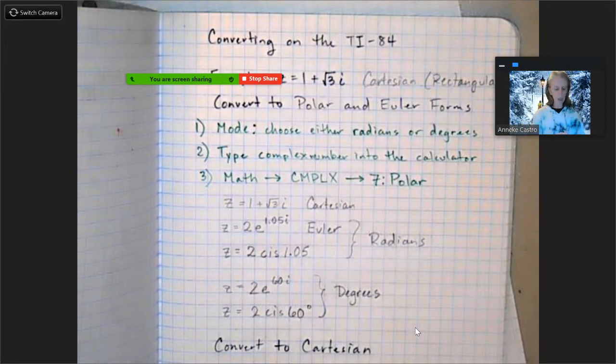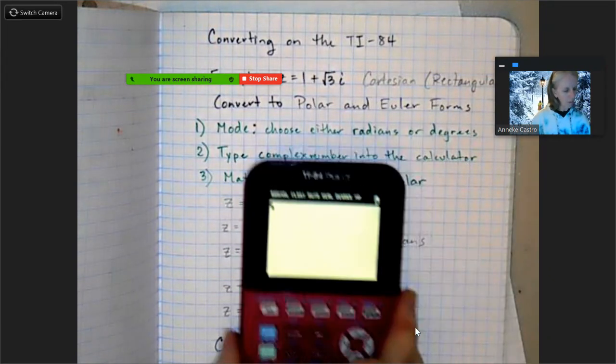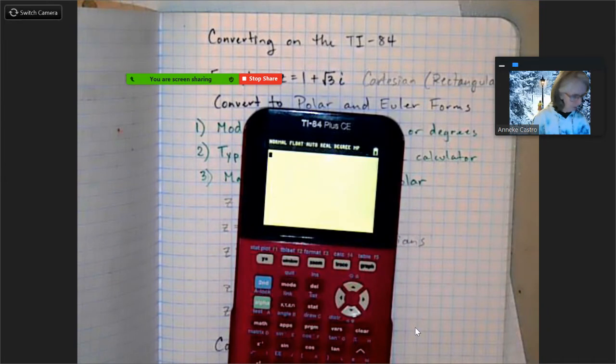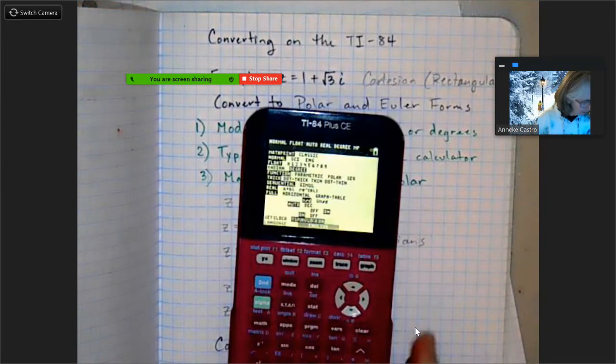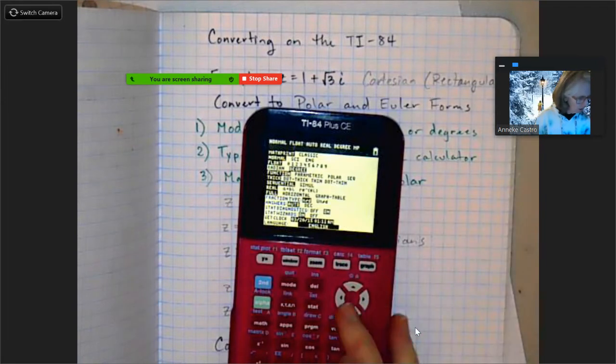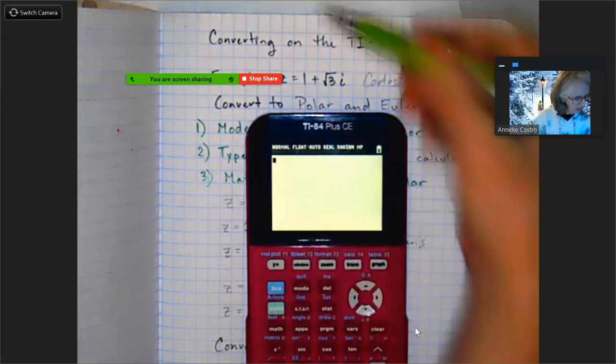First of all, what you want to do is check your mode and see if you are in radians or degrees. The first time through I'm going to do it in radians, so make sure that you are in radians if you want to be in radians and degrees if you want to be in degrees. So right now I'm not in radians, so I'm going to change that to radians and second quit.